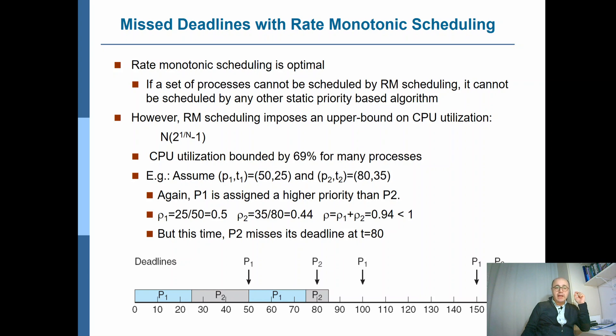And when N becomes very large, when N goes towards infinity, it will be bounded with almost 69%. That means if you have a process load above 69%, rate monotonic scheduling will not find a feasible solution.